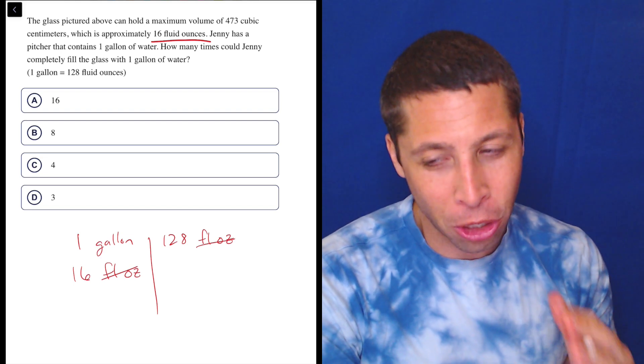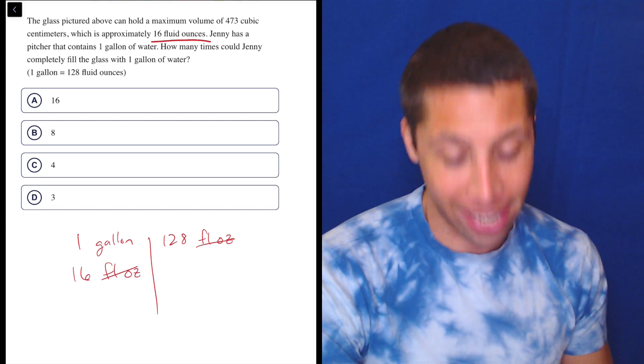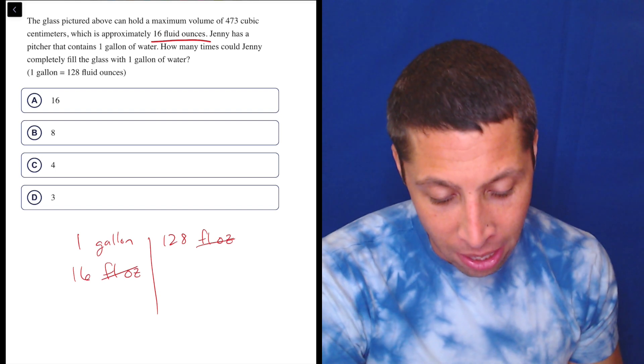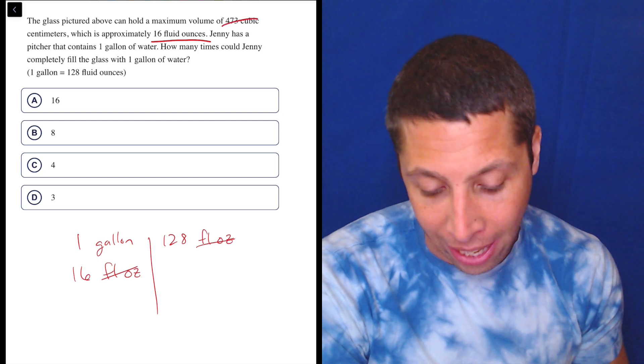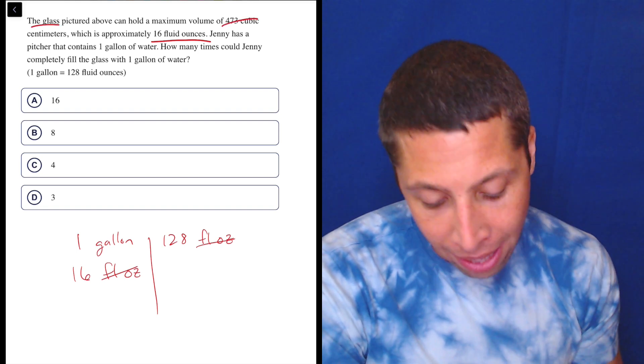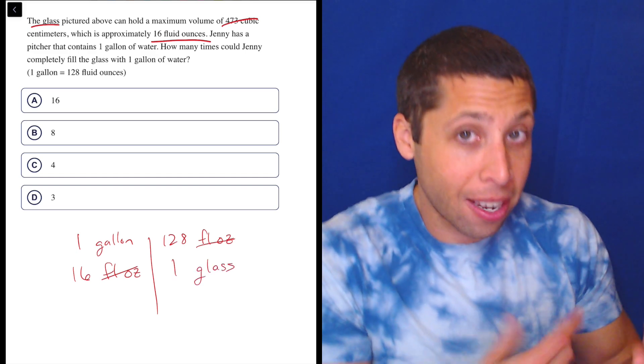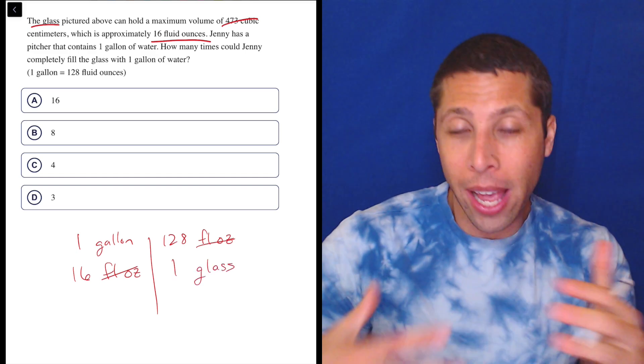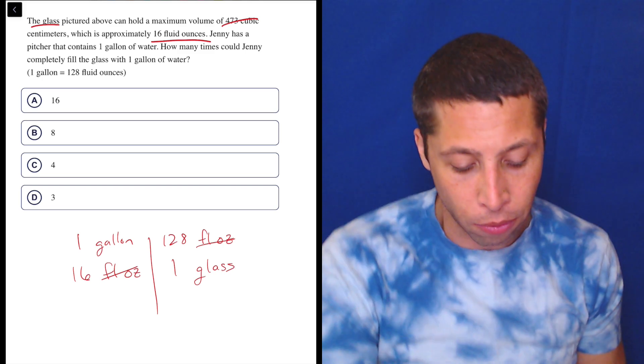Well, this is where the chart method, the table method here can be really nice if we're just kind of confident in it. 16 fluid ounces. Some of you are going to go to it's 473 cubic centimeters, but I don't care about that. They don't ever talk about that. That is the glass. So how about we just make one glass kind of our unit? It's a rate in a way. It's a conversion that one glass is equivalent to 16 fluid ounces.